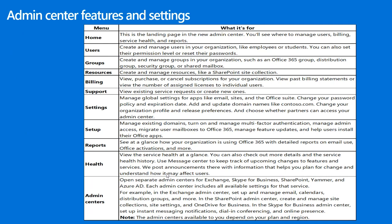In the Reports tab in the left pane, we can see at a glance how our organization is using Office 365 with detailed reports on email use, Office activations, and more. In the Settings tab, we can manage global settings for apps like email and sites, change our password policy and expiration date, add and update domain names, change organization profile and release preferences, and choose where partners can access the Admin Center.